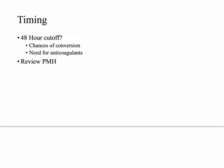On timing: the 48-hour cutoff is critical. For successful cardioversion — electrical or pharmaceutical — your best chances are within 48 hours of the first AFib diagnosis. This window also determines your need for anticoagulation. If you catch a patient within 48 hours of AFib onset and perform cardioversion, you may not necessarily need to anticoagulate beforehand.